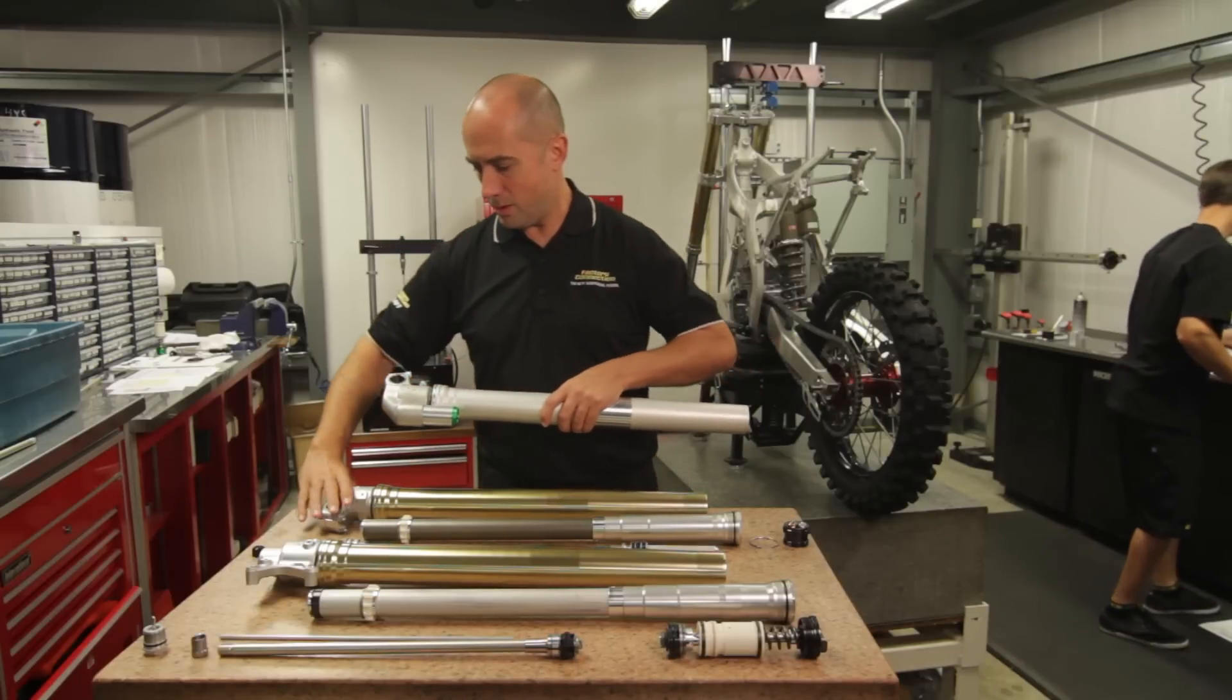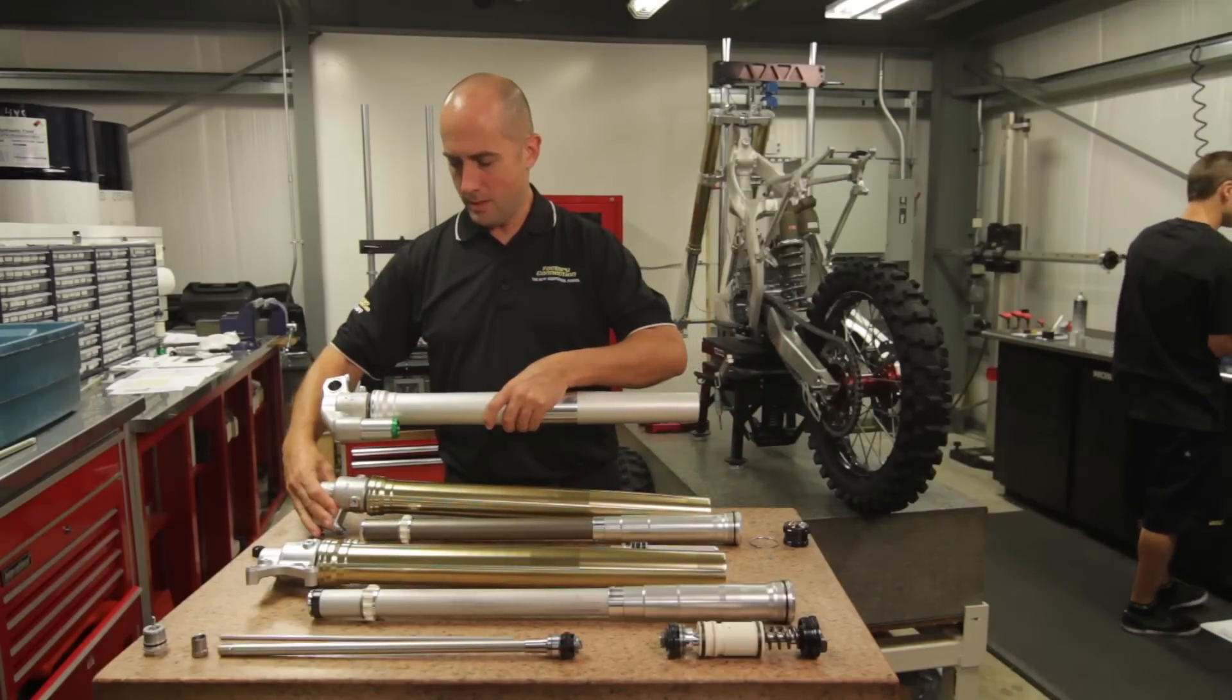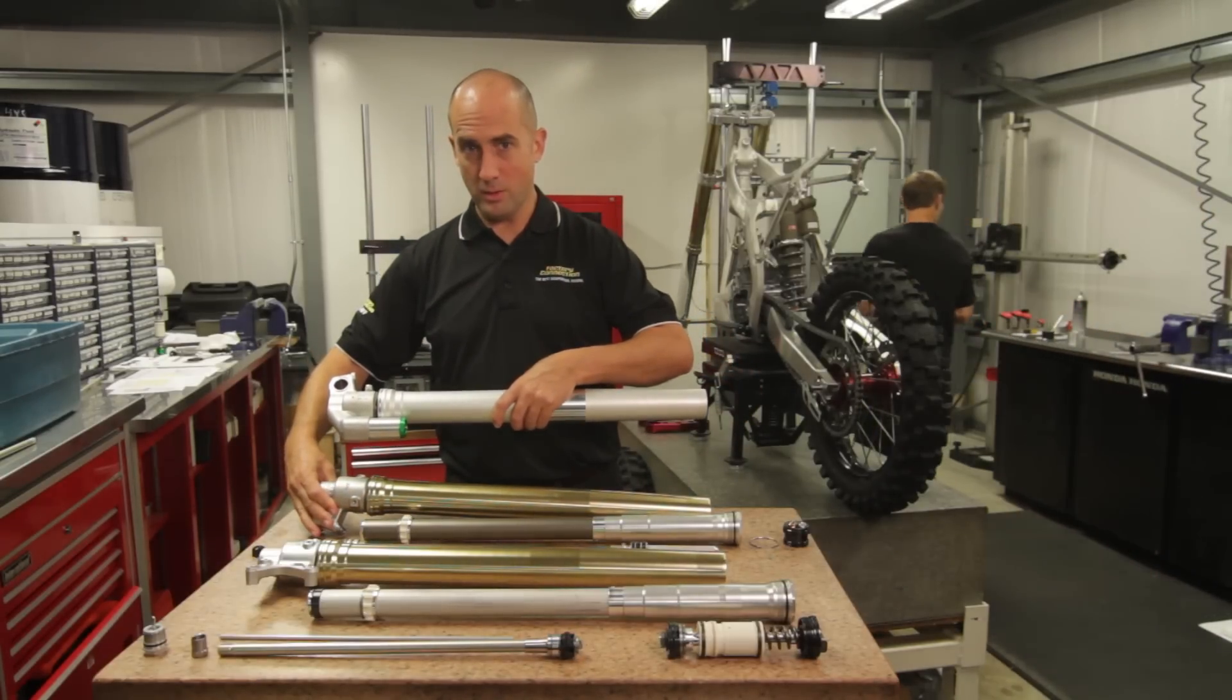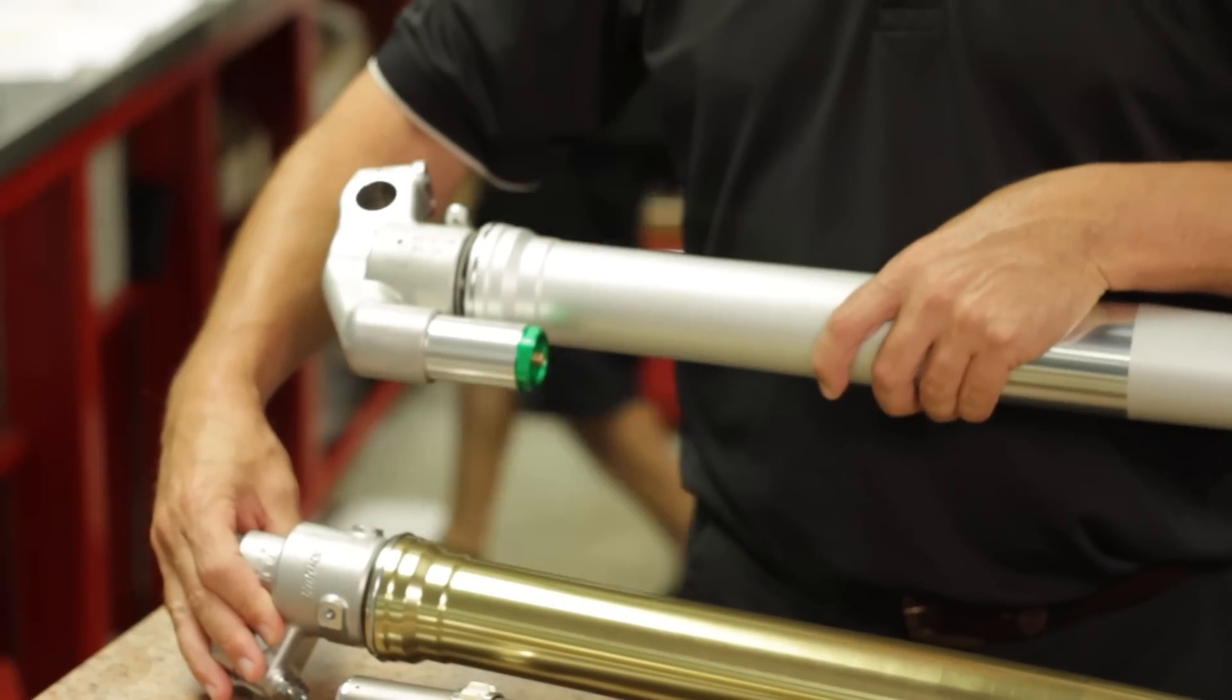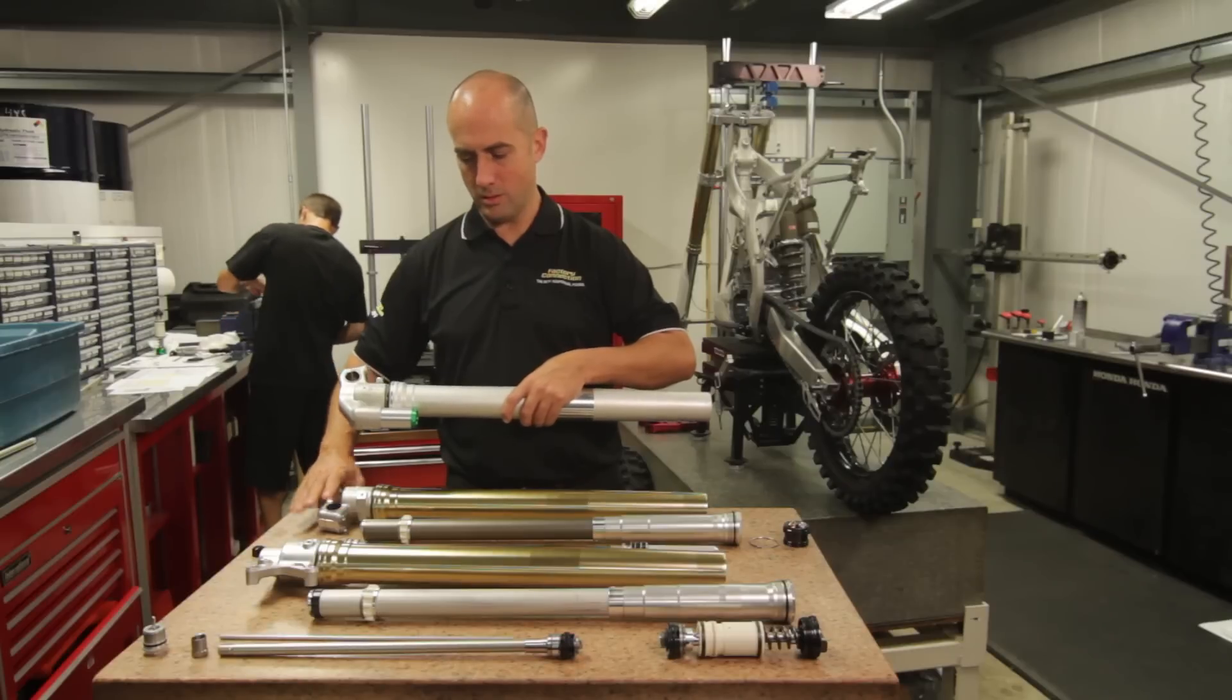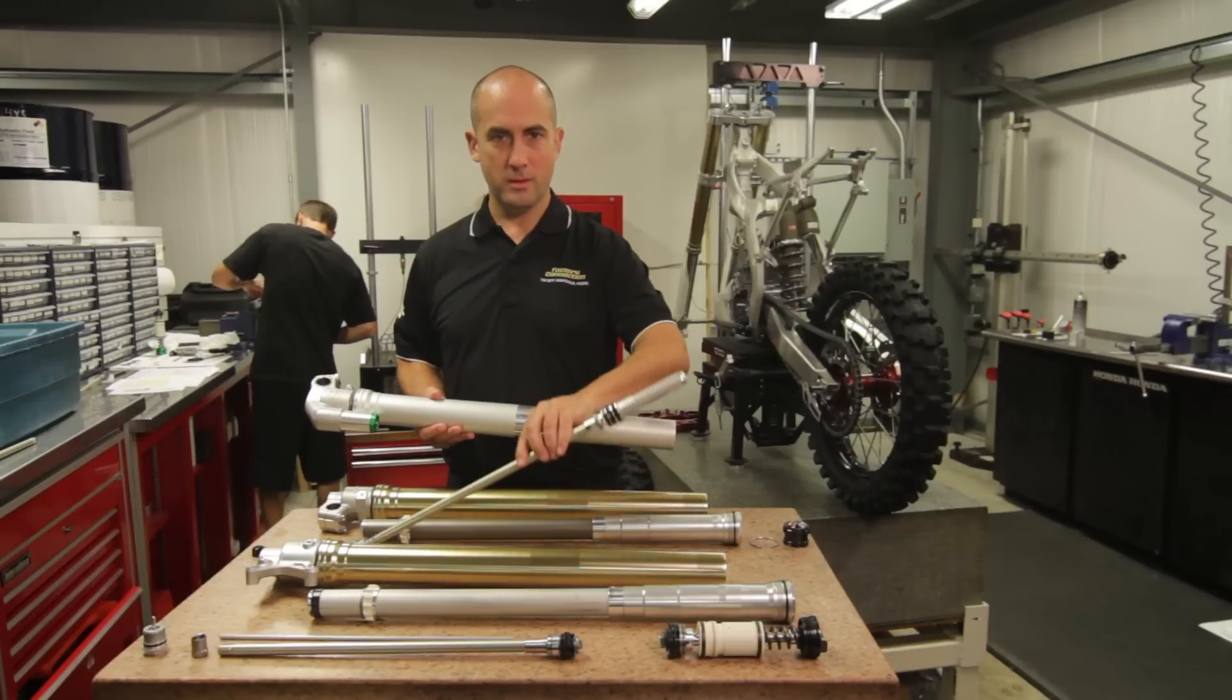So here you can see the difference between the two forks. This one has the negative chamber or the balance chamber on the outside on the lug where the Honda one is not present because it's internal like we just showed you with the damper rod itself.